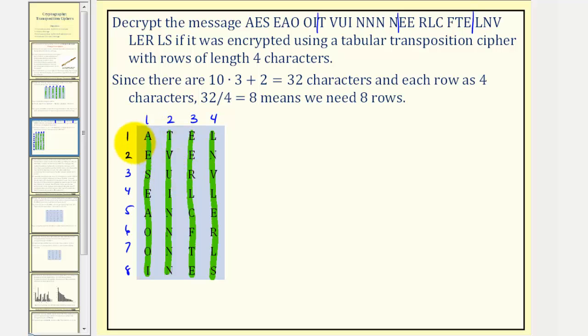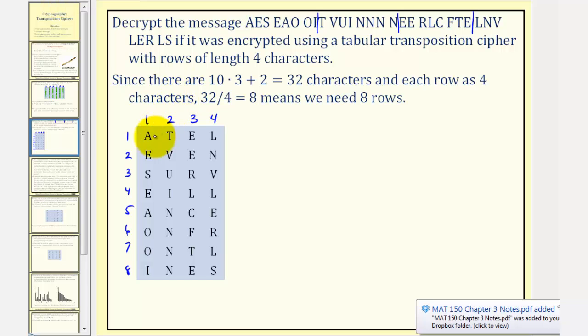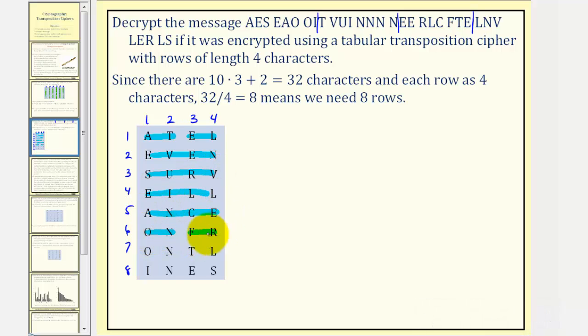Now to decrypt this, we'll read this off going row by row. So the original message was, at 11, surveillance on front lines. Again, the message was, at 11, surveillance on front lines.